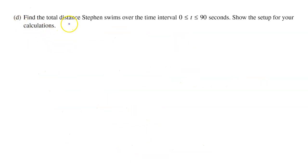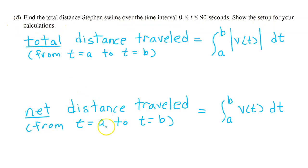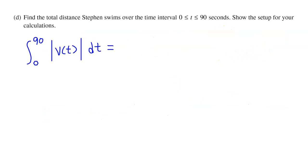Part D: Find the total distance Stephen swims over the interval from 0 to 90 seconds. Show the setup for your calculations. This is very similar to part c, where we found the net distance traveled by integrating velocity from a to b. For the total distance traveled, we need to integrate the absolute value of velocity from a to b. So let's use our graphing calculator to find the integral of the absolute value of velocity from 0 to 90.